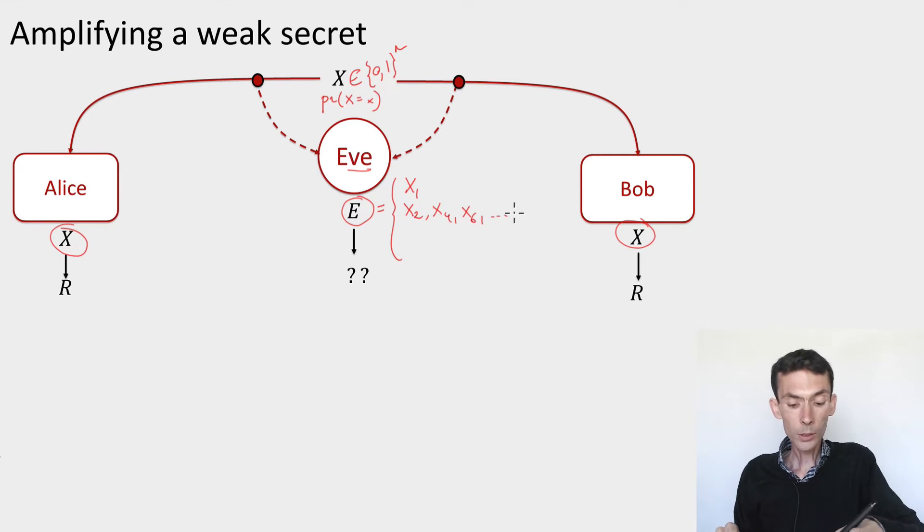Another example is that e could contain the parity of those bits, x2 plus x1, x2, x3, etc. In general, e could even be a quantum state, a state ρxe that depends on x. For instance, it could be an encoding of x in a computational basis or the Hadamard basis or maybe a mix of these two bases. So any kind of side information that the eavesdropper has kept.